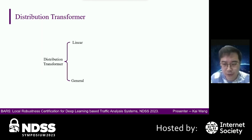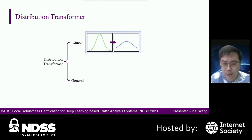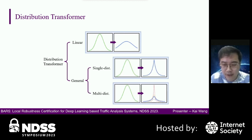Our distribution transformer can be divided into a linear distribution transformer and a general distribution transformer. The linear distribution transformer directly multiplies a weight times the classical isotropic noise, and the noise distribution function stays the same. On the basis of the linear distribution transformer, the general distribution transformer uses new noise distribution functions to improve representation capability. We can use a single distribution function or the superposition of multiple distribution functions.